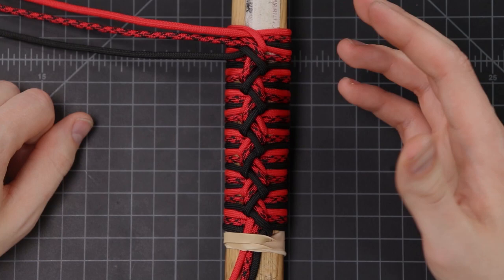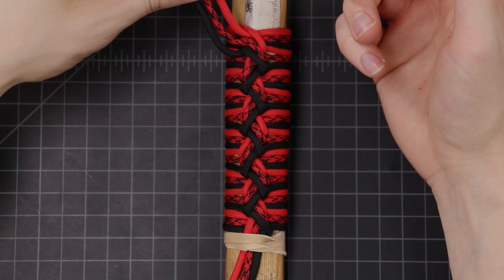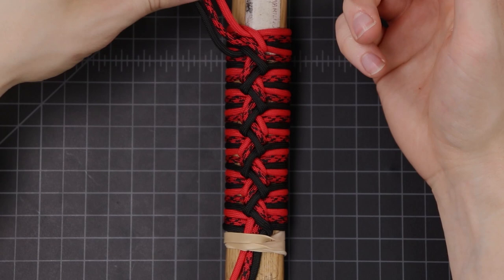All right, so there's our completed handle wrap. Like I said you wouldn't leave the ends just hang like this. You'd probably want to tie them up in some other kind of knot. A turk's head wrap would tighten that down really nicely. Or else you could use a clove hitch or a constrictor knot just to secure the ends.